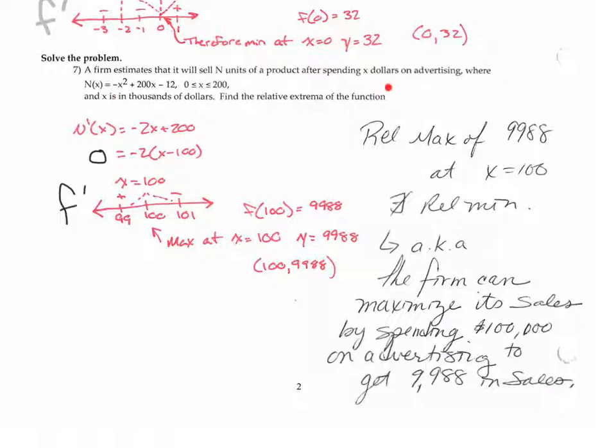when you have one that isn't just an equation or function and it's got some sense-making problem to it, you can write your solution with respect to that. And it's the firm can maximize its sales by spending $100,000. We only have 100 here for our critical value, but x is in thousands of dollars. So it's $100,000 in advertising to get 9,988 in sales.